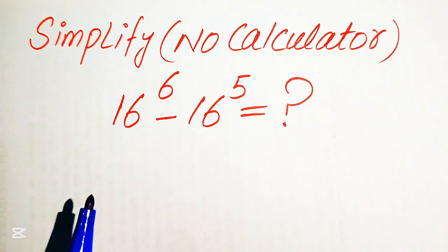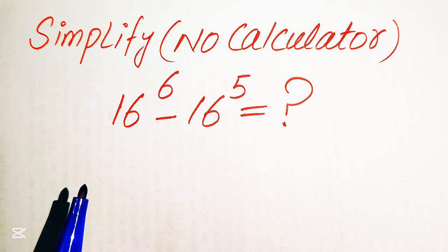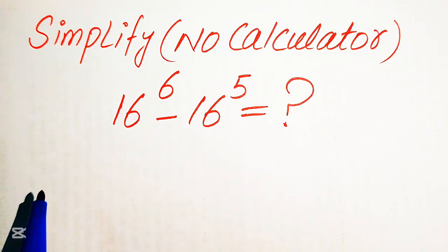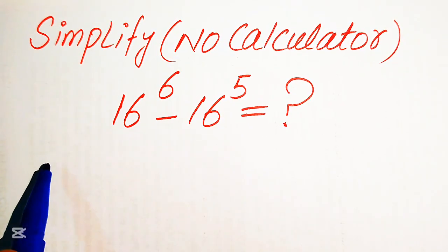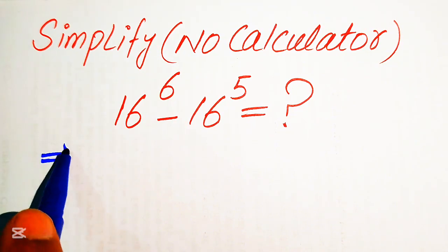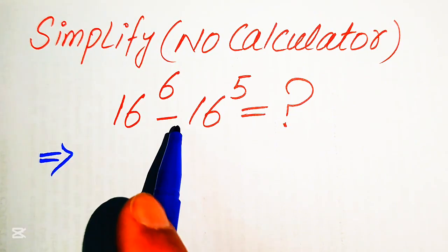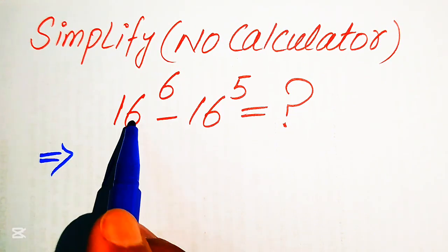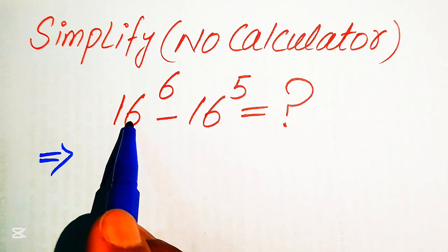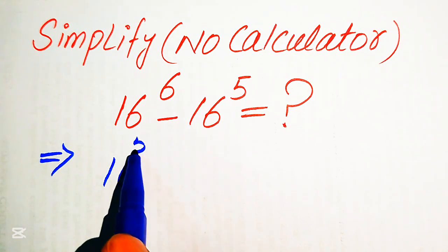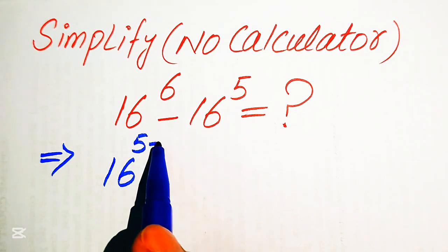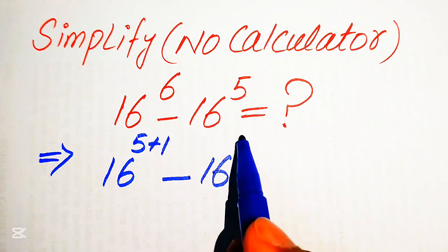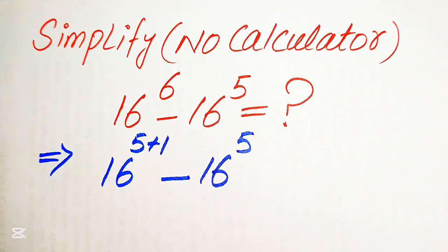No calculator means that we will do all of the working on this paper. So the very first step we are going to do is rewrite this equation: here we break the exponent of this 16 — it is 6, we write it as 5 plus 1, minus 16 to the power of 5.